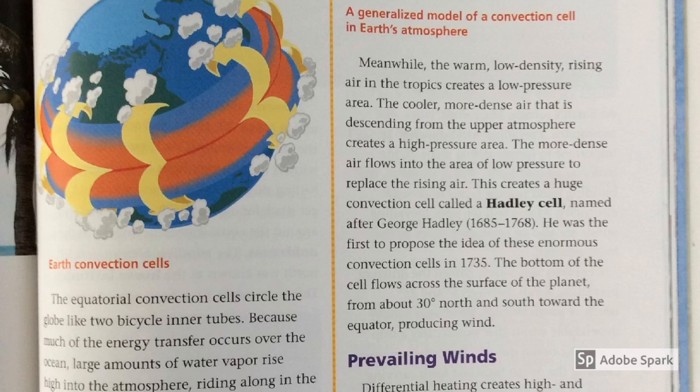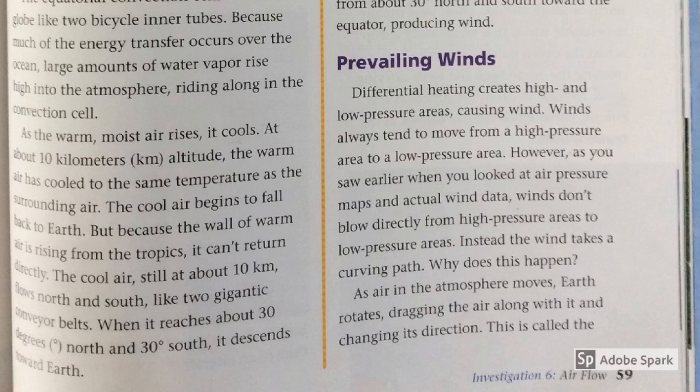The cooler, more dense air descending from the upper atmosphere creates a high-pressure area. The more dense air flows into the area of low pressure to replace the rising air. This creates a huge convection cell called a Hadley cell, named after George Hadley, who first proposed the idea of these enormous convection cells in 1735. The bottom of the cell flows across the surface from about 30 degrees north and south towards the equator, producing wind. Differential heating creates high and low-pressure areas causing wind, and winds always tend to move from a high-pressure area to a low-pressure area.